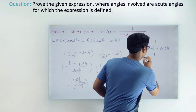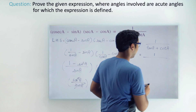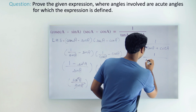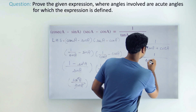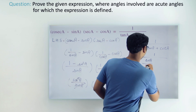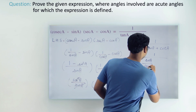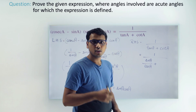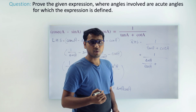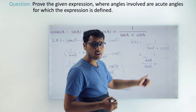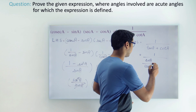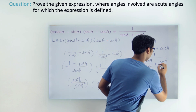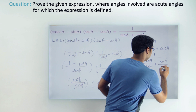Breaking them down: tan a is sin a over cos a, and cot a is cos a over sin a. So the RHS becomes 1 divided by (sin a over cos a plus cos a over sin a).